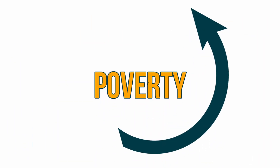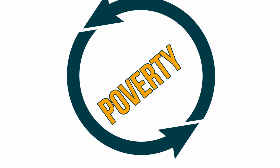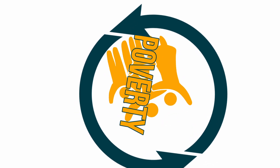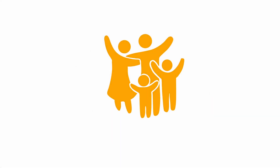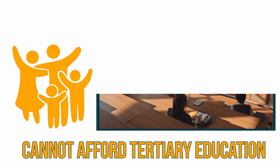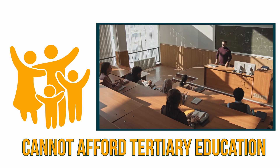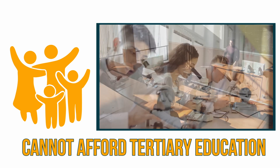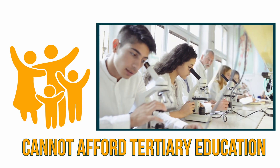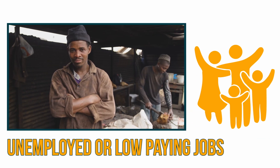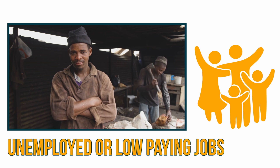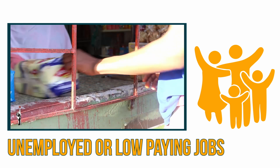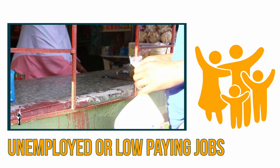Poverty is a vicious cycle and if a family falls into poverty, it is difficult for members of that family to break free from that cycle as they cannot afford tertiary training or education. These people cannot acquire the skills and knowledge that they will need to get a job, which means they find themselves unemployed or in jobs that do not pay well and therefore have to live below the bread line.